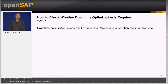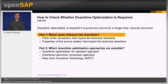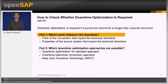The agenda is: when is downtime optimization required? It is required if the experienced downtime is longer than the required downtime — so it is about your experience with the first system conversion runs. In part one we focus on the parts that influence the downtime, including properties of the source system. In part two we focus on the three approaches we have to optimize the downtime.